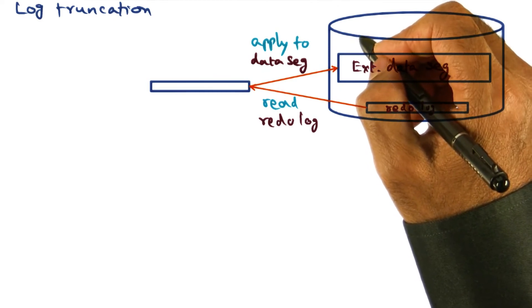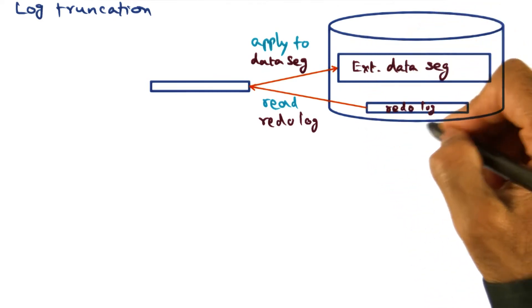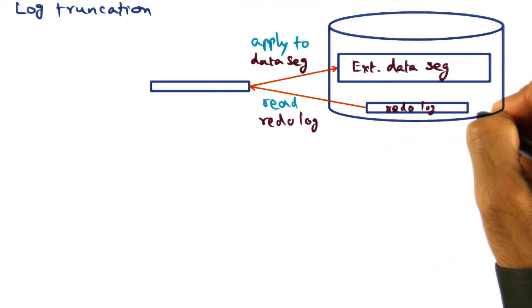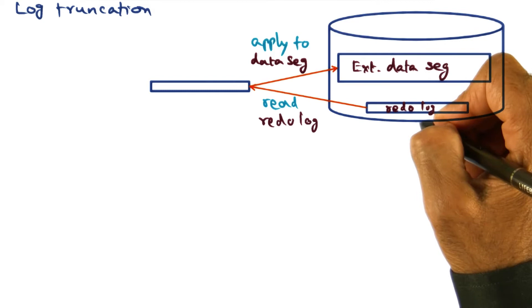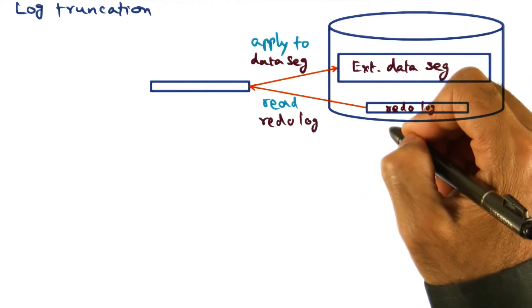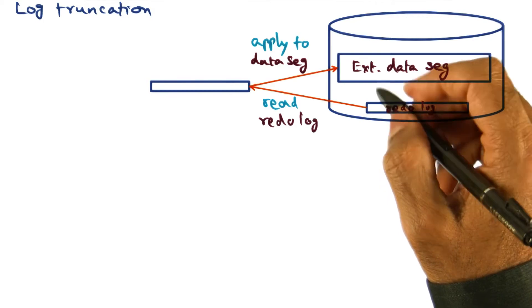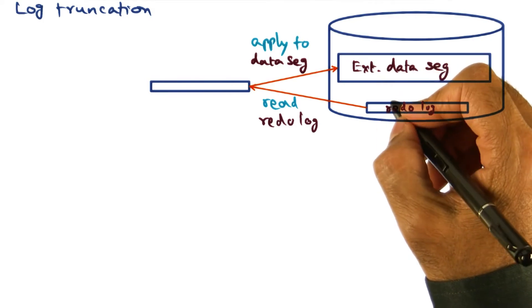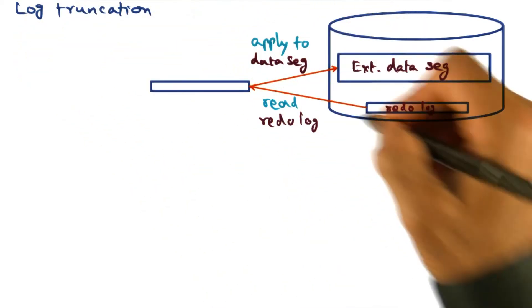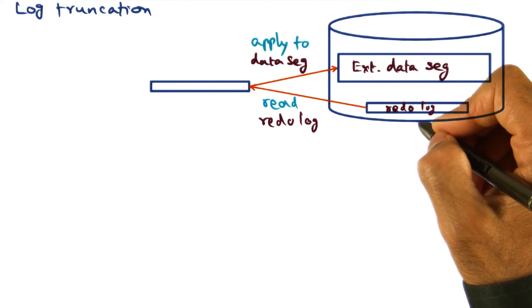What exactly is truncating the log? It means that we want to read the logs from the disk and apply them to the external data segments and get rid of them. Now, this sounds exactly like what I described to you happens when we do recovery from a crash. Therefore, for log truncation, simply apply crash recovery algorithm.